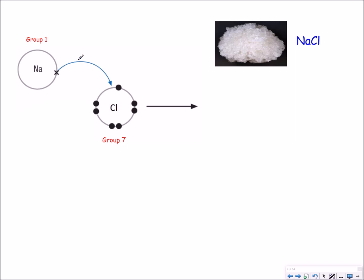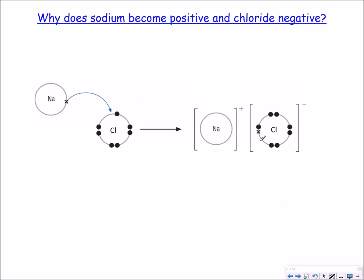This electron then gets transferred to a chlorine atom which needs one electron to complete its own shell and therefore we end up with a positively charged sodium atom and a negatively charged chloride ion.